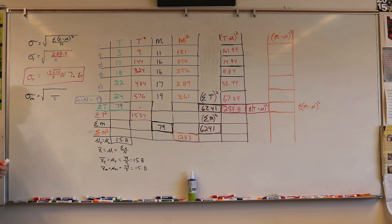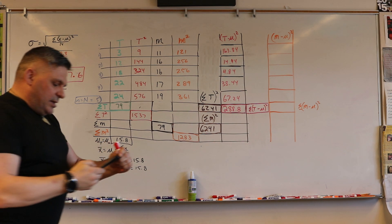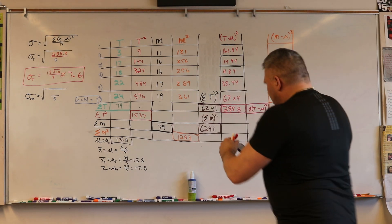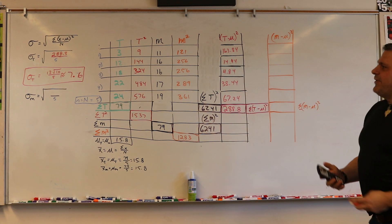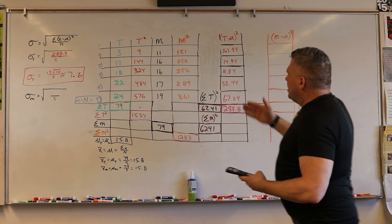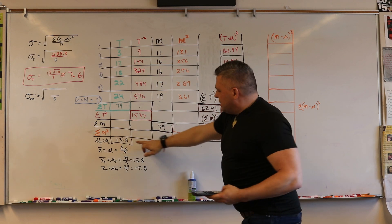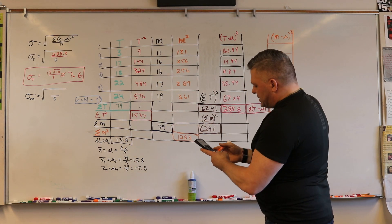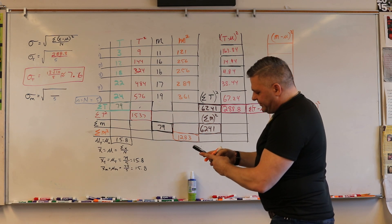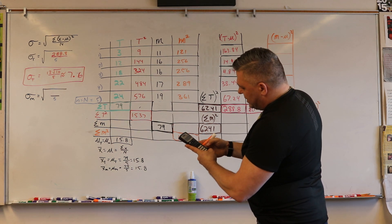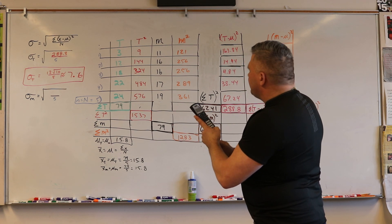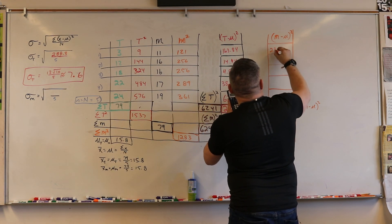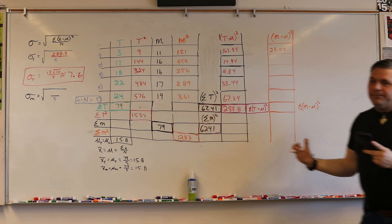Right now we're going to do the Manly one kind of live versus just explaining it. So again, we're going to take Manly minus 15.8, so we're going to take 11 minus 15.8, hit equals, and then square it. We get 23.04.